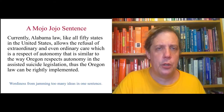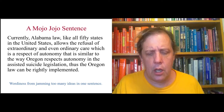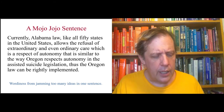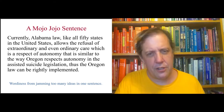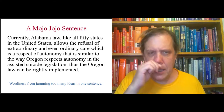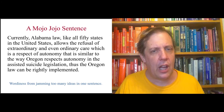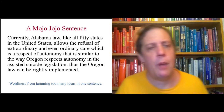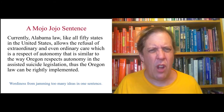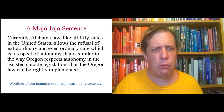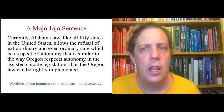This is what I call a Mojo Jojo sentence. Mojo Jojo was the villain in a kids' cartoon called Powerpuff Girls, and part of the joke was that he just went on and on and repeated himself a lot. So a Mojo Jojo sentence is just my term for a sentence that tries to jam too many ideas into one sentence. Sometimes these get called a run-on sentence. The point is that there's too much stuff here.